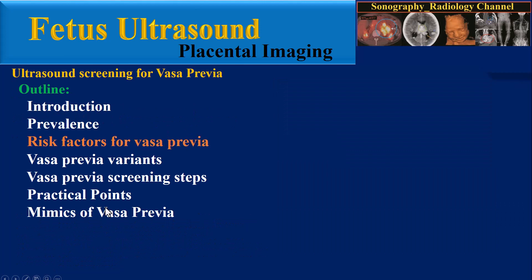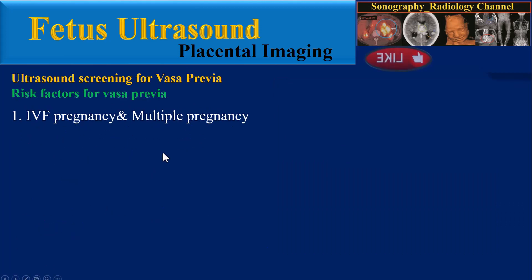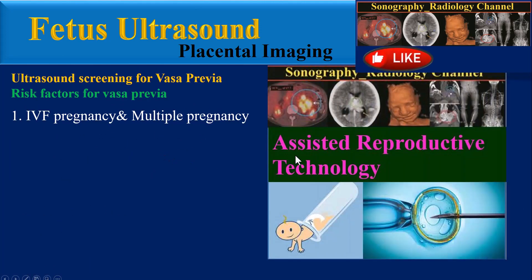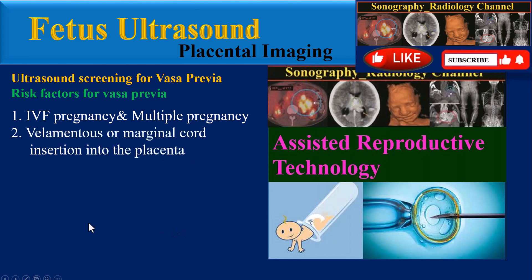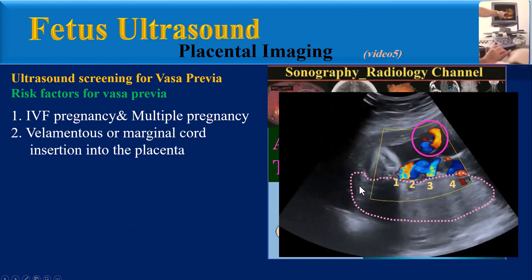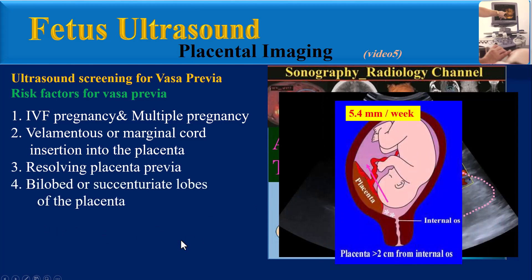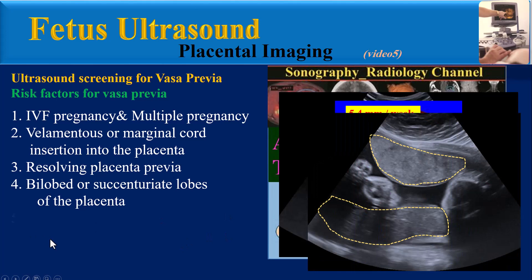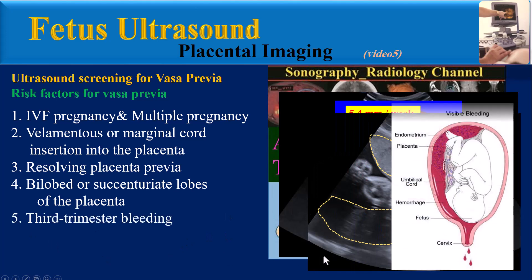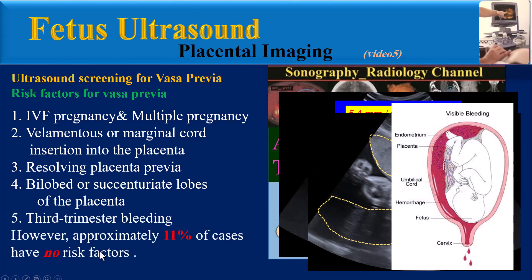Risk factors for Vasa Previa include: IVF pregnancy and multiple pregnancy, velamentous or marginal cord insertion into the placenta, resolving placenta Previa, bilobed or succenturiate lobes of the placenta, and third trimester bleeding. However, approximately 11% of cases have no risk factors.